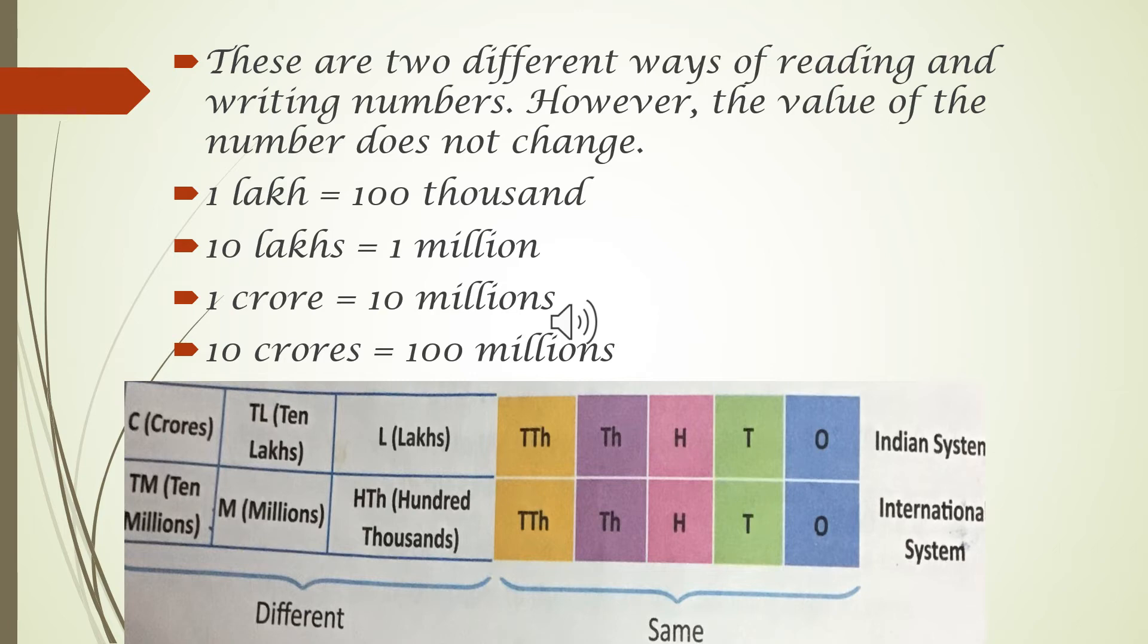The 6th place under Indian system is 1 lakh, under international system 100,000. 7th digit is 10 lakhs in Indian system, 1 million in international system. 8th digit: 1 crore under Indian system, 10 millions under international system. 9th digit: 10 crores under Indian system, 100 millions in international system. Value remains the same. Namings are different under the 2 systems.